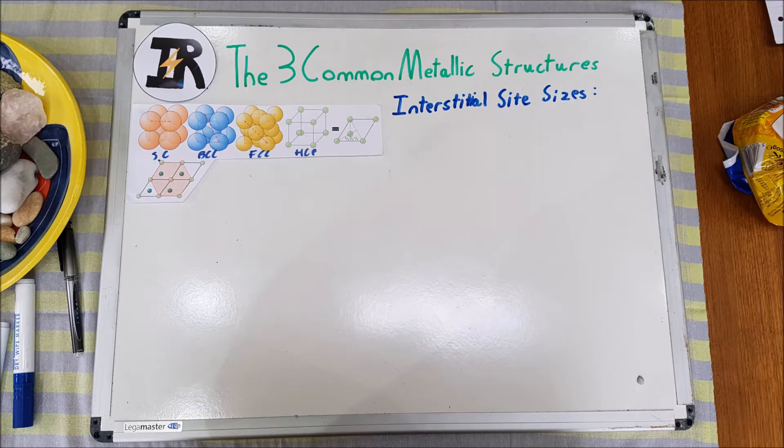In today's video, we will be investigating how to obtain the relative sizes of the interstitial octahedral and tetrahedral sites in the FCC and BCC structures. These results can give us further insights into the extent of solid solubility of a solute atom in a solvent atom's crystal structure.